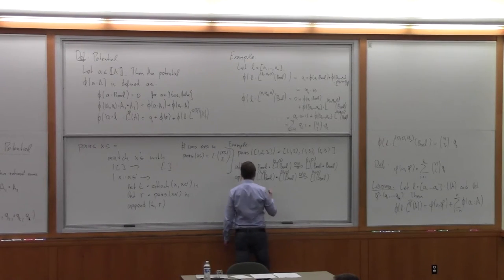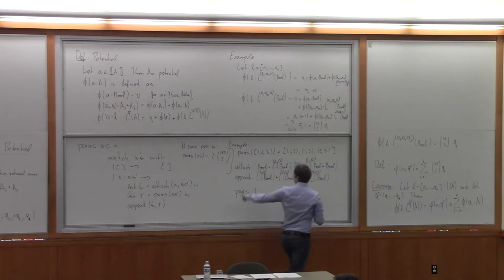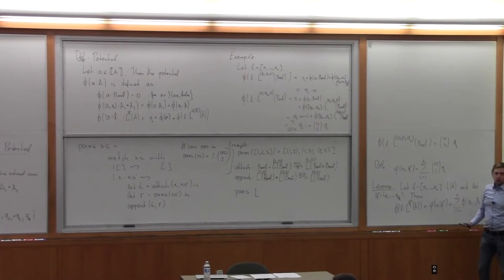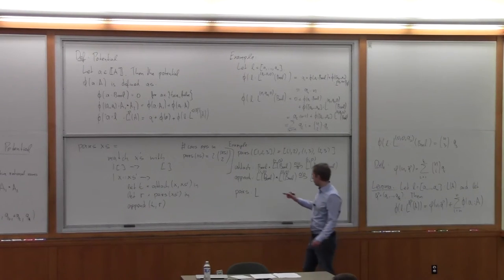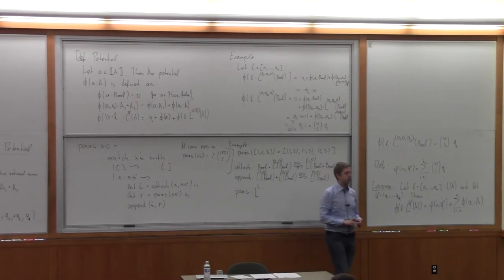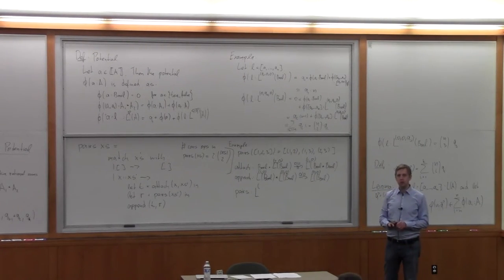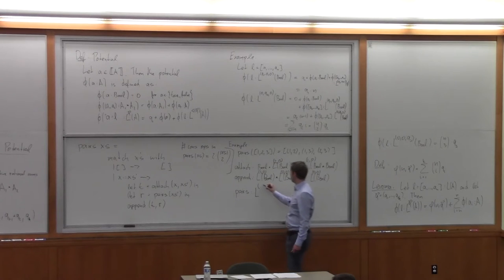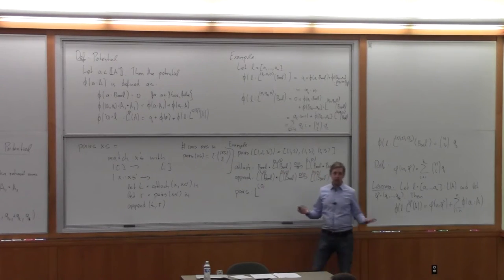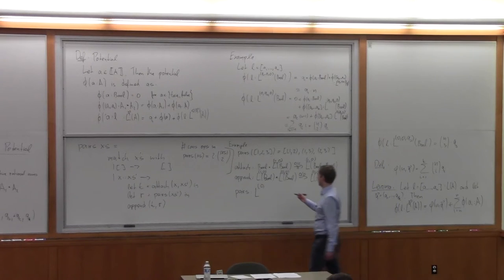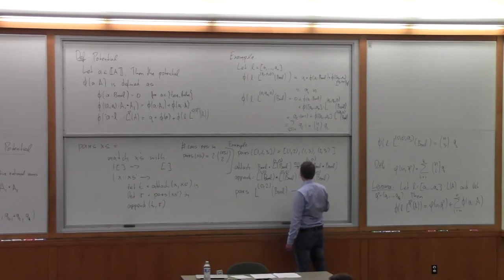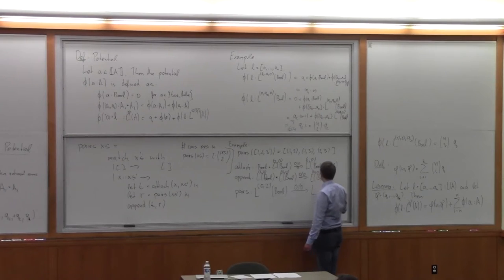The type we assign to pairs has annotation vector (0, 2): zero for the linear part, 2 for the quadratic part, and zero for the constant. This means the potential is 2 times N-choose-2. We start with this potential in the context, and at the end we want the output list with annotation (0, 0), meaning all potential has been used up to pay for cons operations.